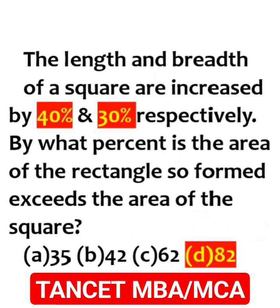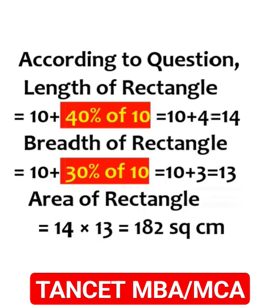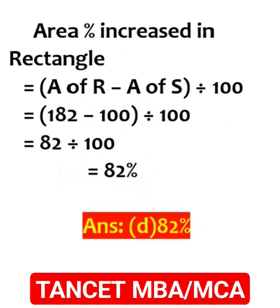The length and breadth of a square are increased by 40% and 30% respectively. What percent does the area of the rectangle so formed exceed the area of the square? If the side of a square is 10 cm, the area will be 100 cm². The length of the rectangle will be 14 and the breadth will be 13. The area of the rectangle is 14 × 13 = 182. So the answer is (182 − 100) ÷ 100 = 82%.